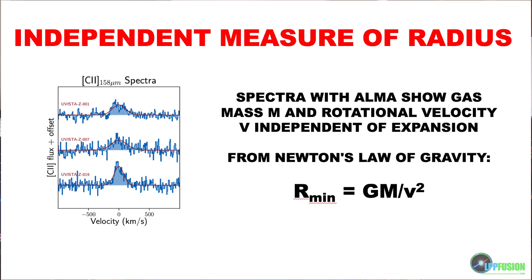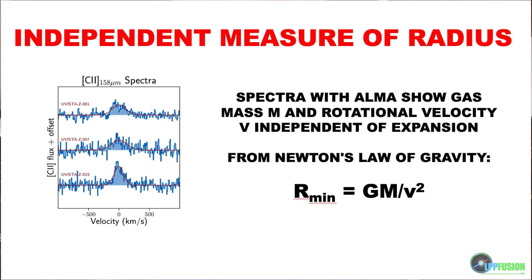If you have the mass of a gravitating object which is spinning around, and you have the velocity at which it's rotating, by this simple formula derived directly from Newton's law of gravitation, you can get the minimum radius that the object must have. It is a minimum because there may be other forces that hold the object together, such as magnetic forces or, if you believe in it, dark matter. But this is the minimum radius it must have with this amount of mass and this velocity.